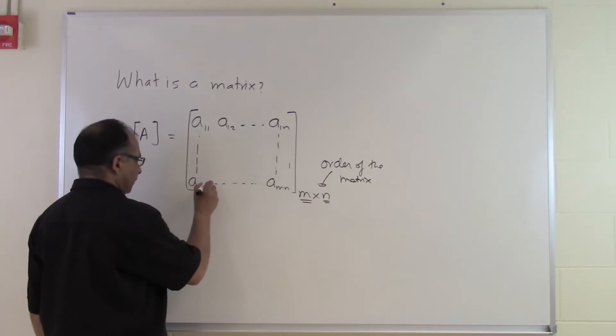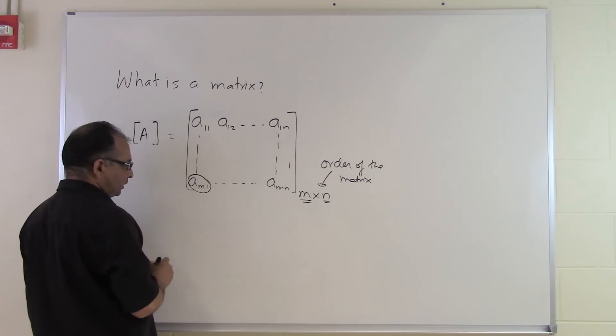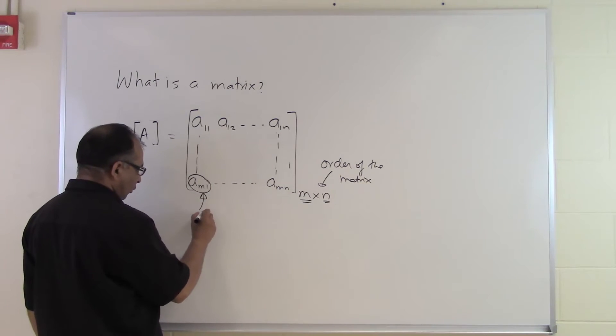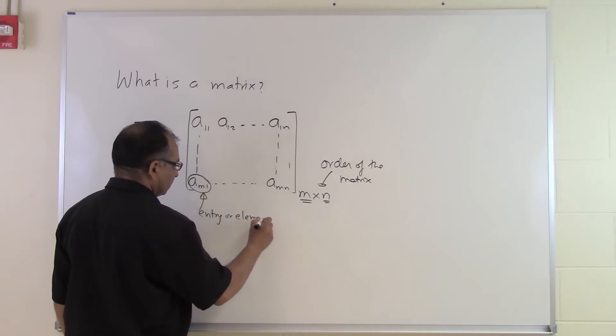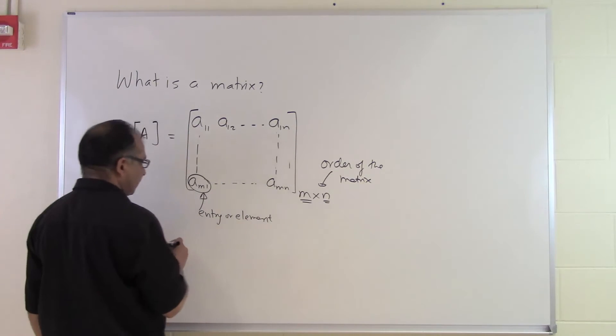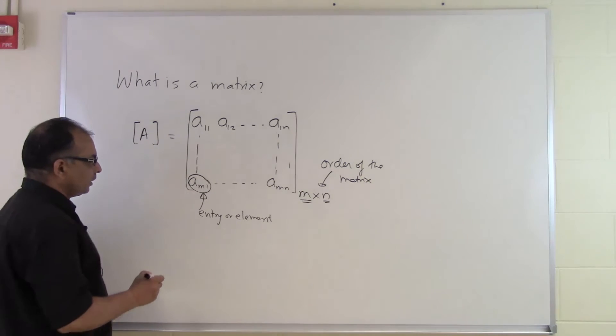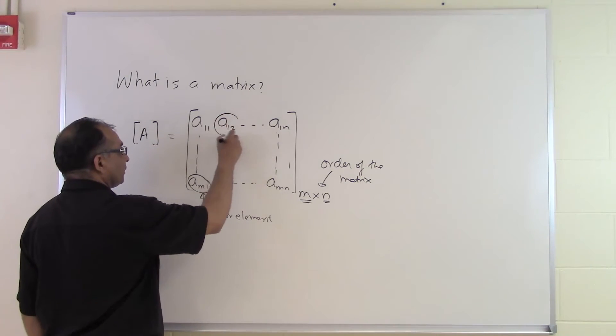Each of these, which you are seeing here, these entries, they are called entry or element. What you're finding out is that each of these entries or elements has a position notated with it.